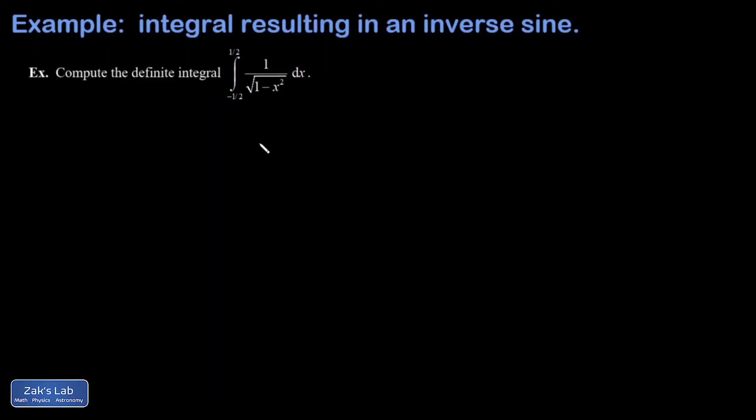In this example we're asked to compute this definite integral from negative one half to one half of one over square root one minus x squared. This is a very short problem if you remember that one over square root one minus x squared is the derivative of the inverse sine function.